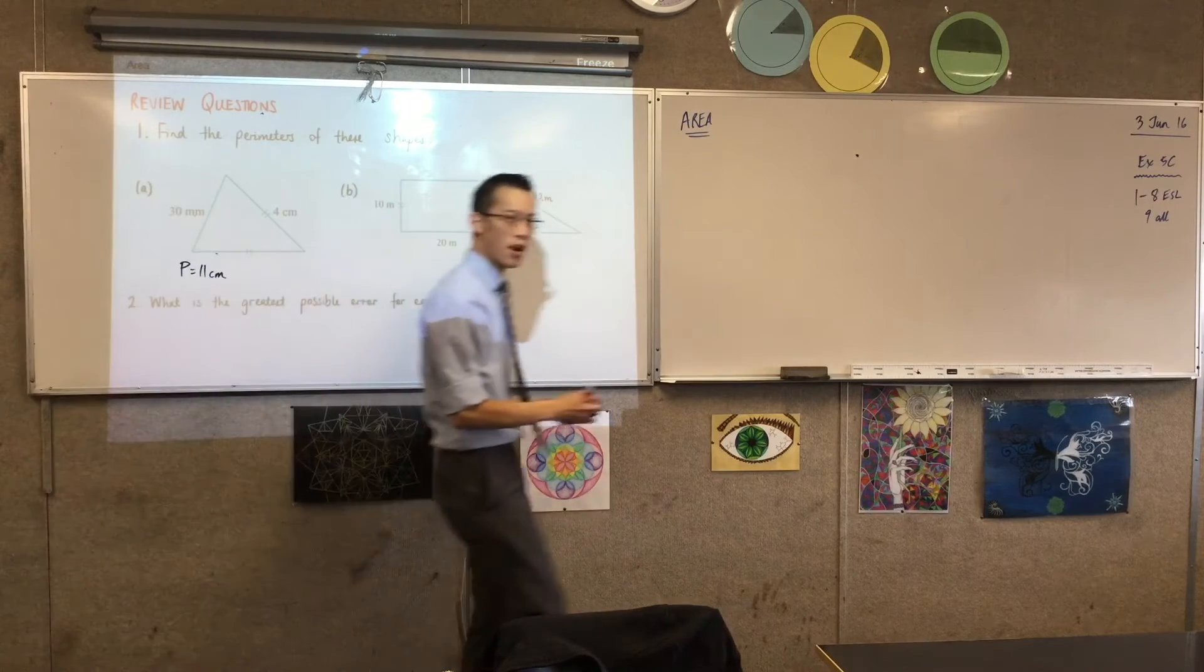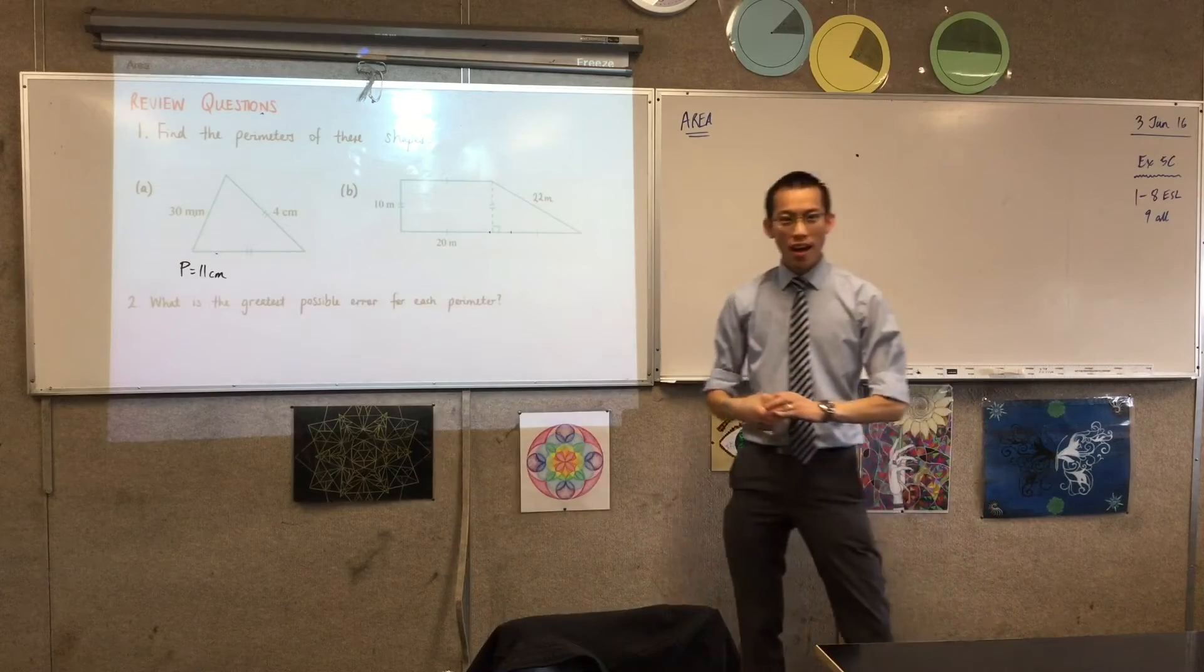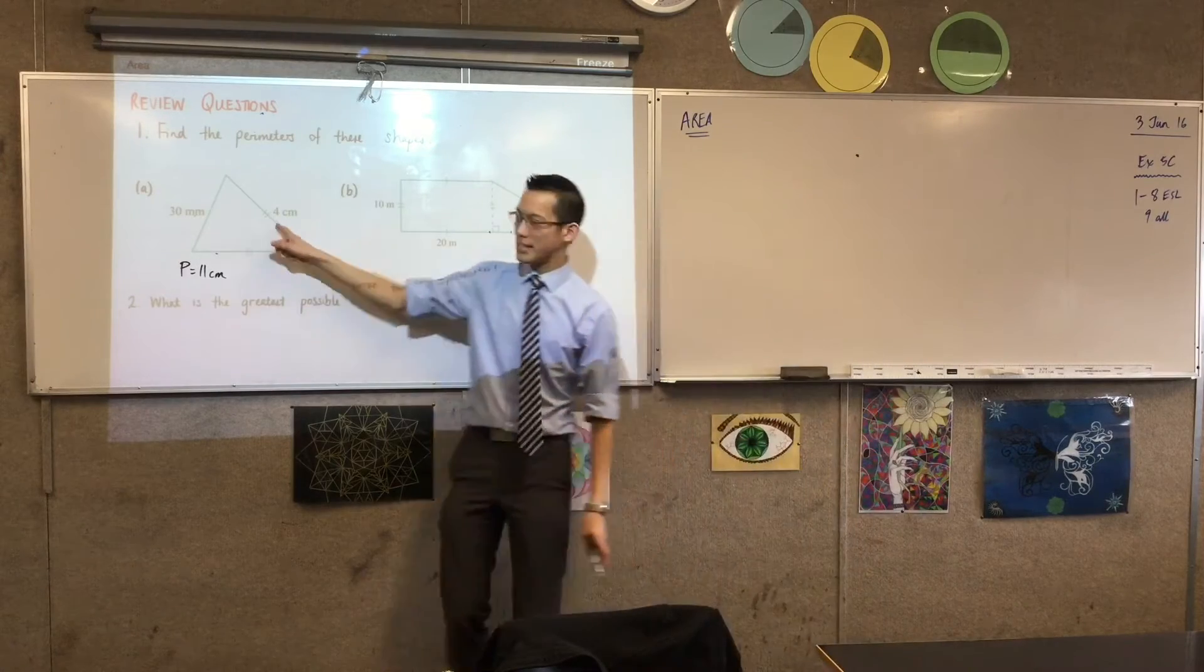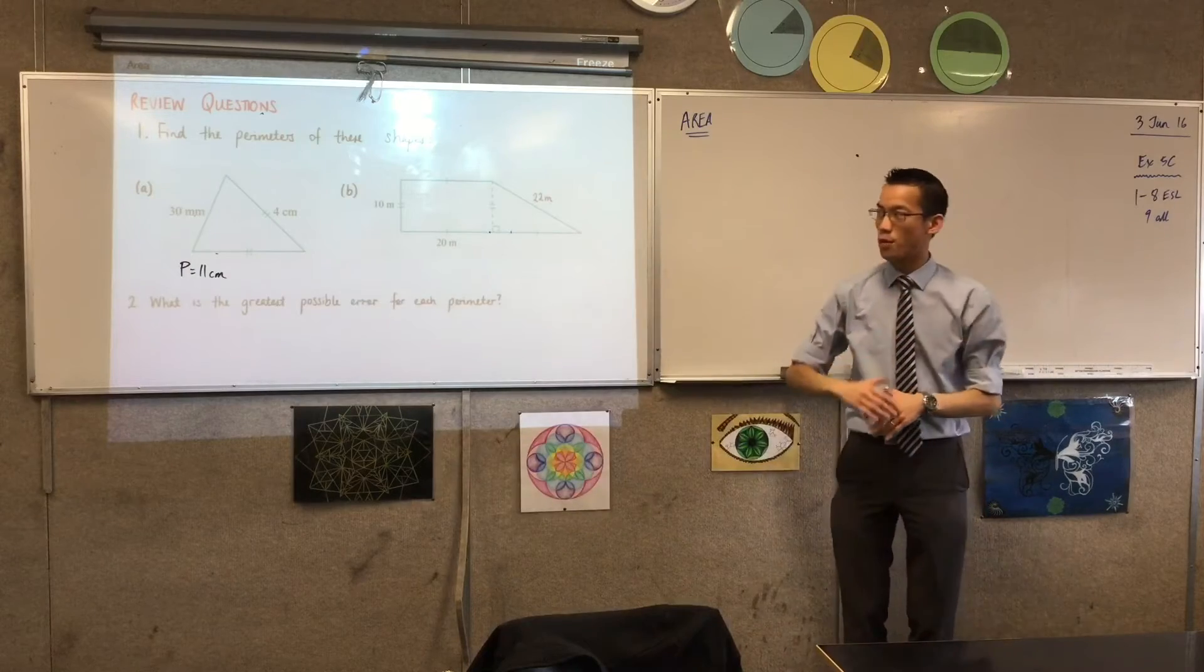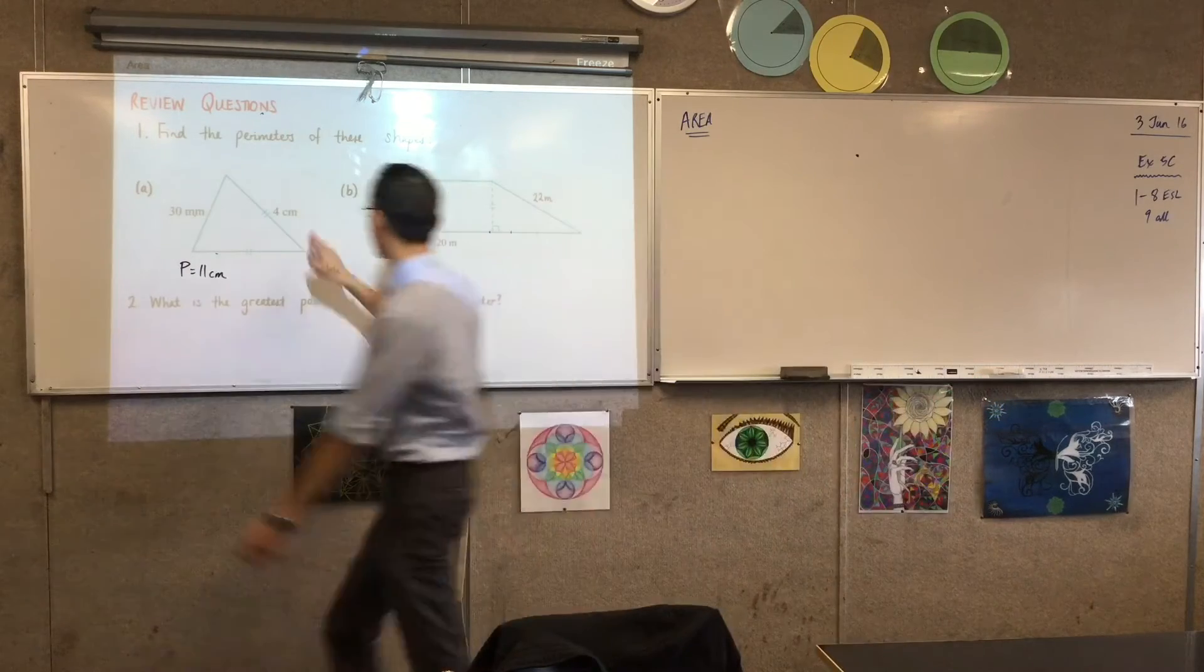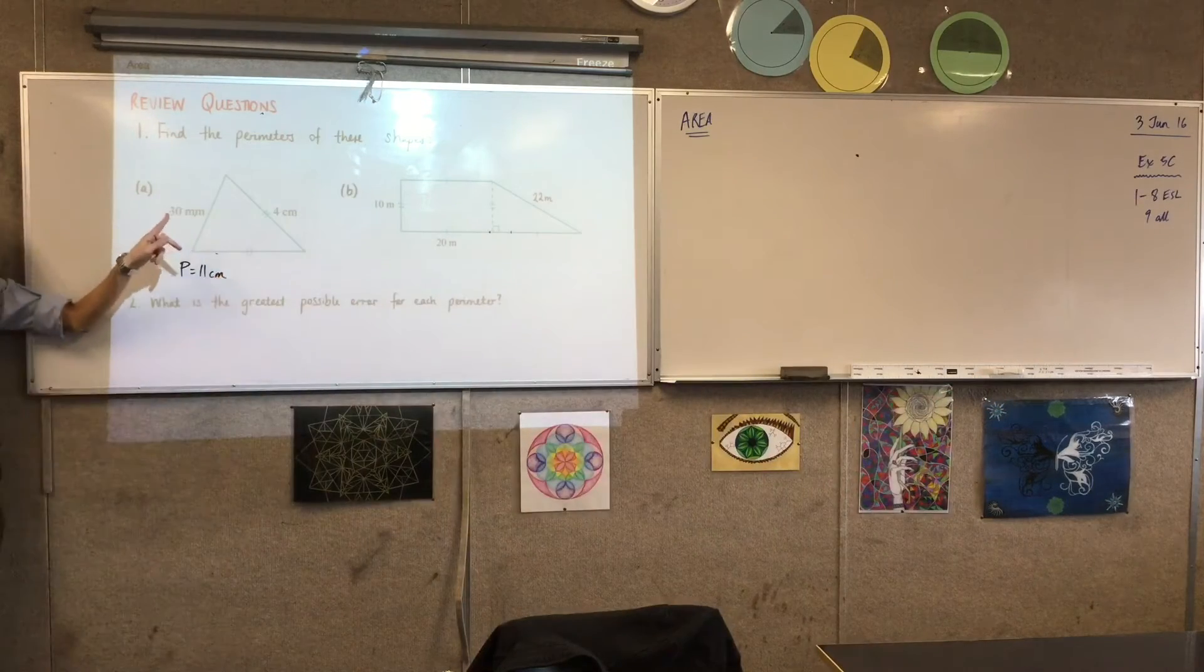Where does this 11 centimeters come from? Okay, so you see these dashes, right? And there's a pair of them on each, meaning those two are both going to be 4 centimeters. So you just did 4 plus 4 plus 3.